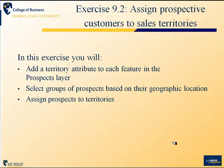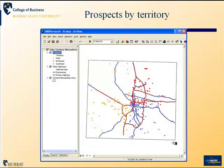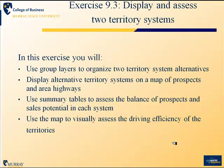Your second task will be to assign prospective customers — liquor stores and restaurants — to sales territories within the Portland, Oregon region. You'll add a territory attribute to each feature in the prospects layer to assign the territory, and select prospects based on their geographic location to assign them to territories appropriately. Then you'll use summary tables to balance the territories by sales levels. The resulting map uses yellow, blue, and red dots to indicate the territory to which each prospect has been assigned.